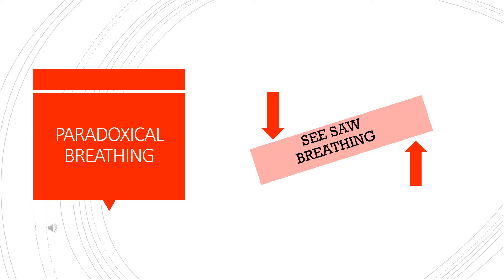It is called the seesaw breathing pattern because there is overactivity of one group of muscles and inactivity of the other group. Basically there are two types of paradoxical or seesaw breathing patterns which are seen in neurological patients.